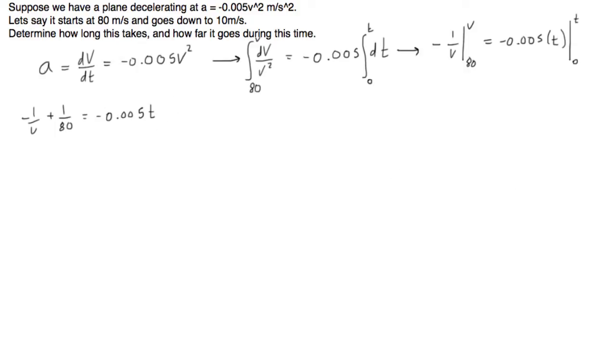Let's multiply everything by negative 1, and you'll see that makes us a lot happier. Now divide both sides by 0.005, that's the same as multiplying both sides by 200. So we get t equals 200 times 1 over v minus 1 over 80. And v was 10, so 1/10 minus 1/80 times 200. If you type this into your calculator, you'll get that the time this interval takes is 17.5 seconds.